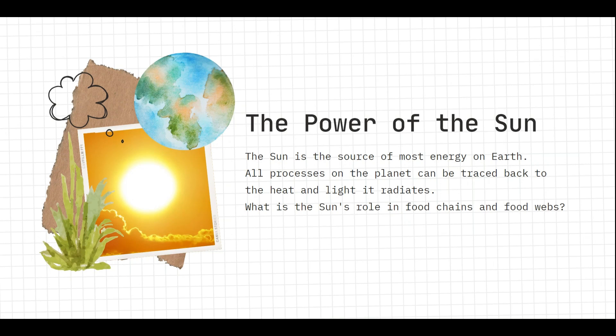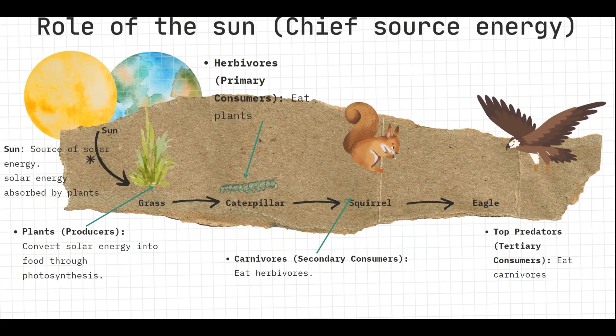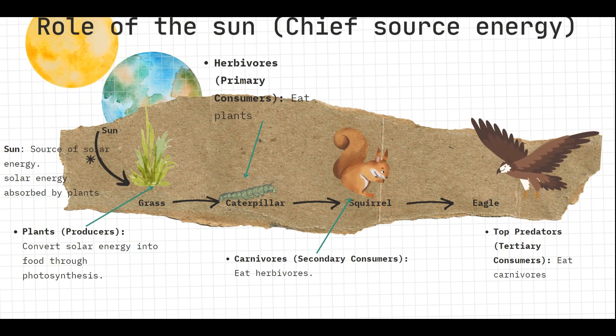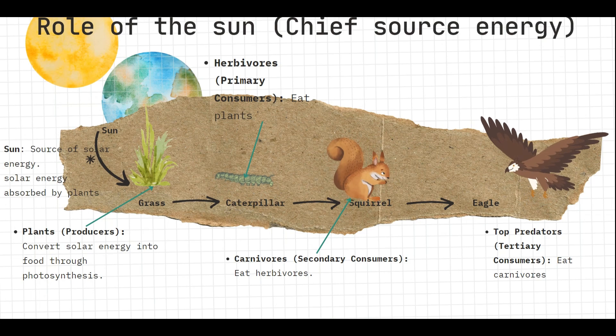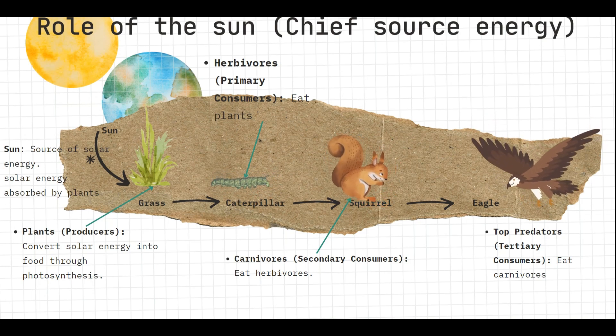Let's look at the importance of the sun in a food chain and food web. The sun is the source of most energy on Earth — all processes on the planet can be traced back to the heat and light energy it provides. The role of the sun is as the chief source of energy, providing solar energy.